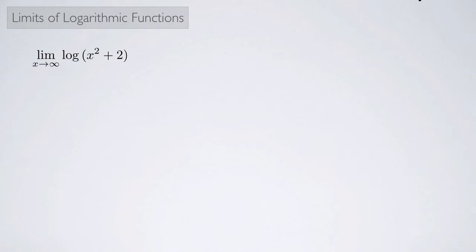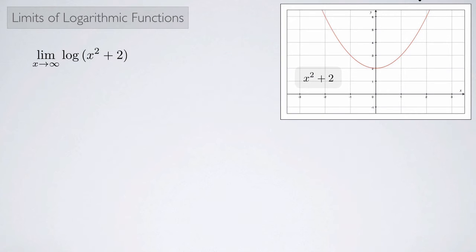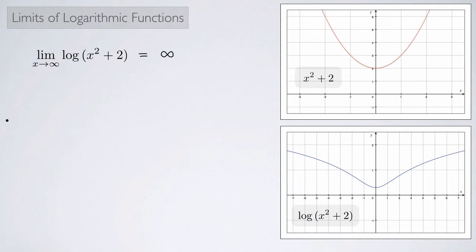Let's look at an example. Suppose we have the limit as x approaches infinity of the log of x squared plus 2 — this is log base 10. Here's a graph of x squared plus 2, and we notice that as x goes to infinity, x squared plus 2 also approaches infinity. So if the argument is approaching infinity, we would expect the log of it to also approach infinity. Looking at the graph of log(x² + 2), as x gets bigger and bigger, it does indeed appear to be approaching infinity.